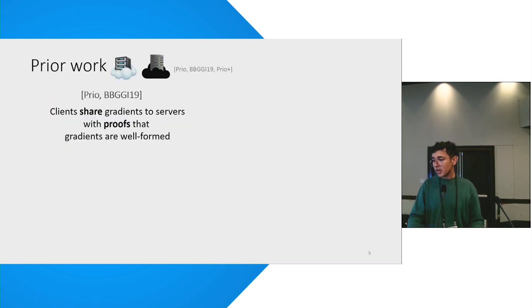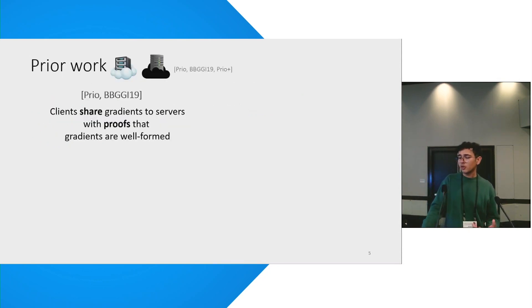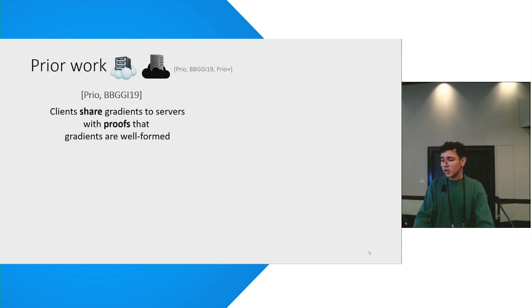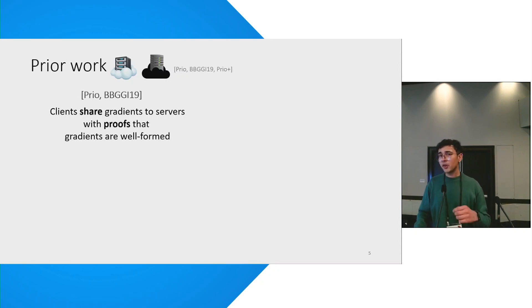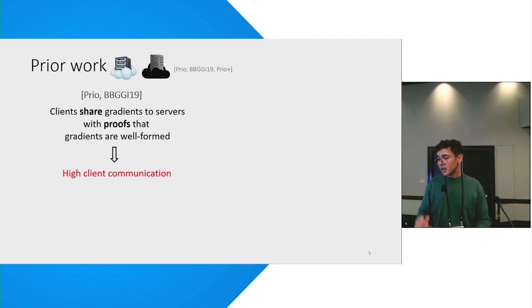Let me start by talking a little bit more about prior work on distributed trust and how they function at a high level. The general template for these works is that the client secret shares its gradients to the two servers and then provides proofs on top of those gradients, attesting to the fact that the gradients are well-formed. And like I said, they have high client communication.